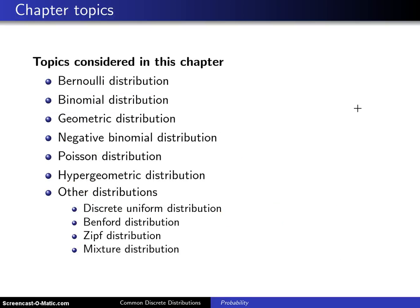Here are the topics that are considered in this chapter. The common discrete distributions are the Bernoulli, binomial, geometric, negative binomial, Poisson, hypergeometric, and then some of the lesser known distributions are the discrete uniform distribution, the Benford distribution, the Zipf distribution, and then mixtures of distributions will be discussed at the very end.